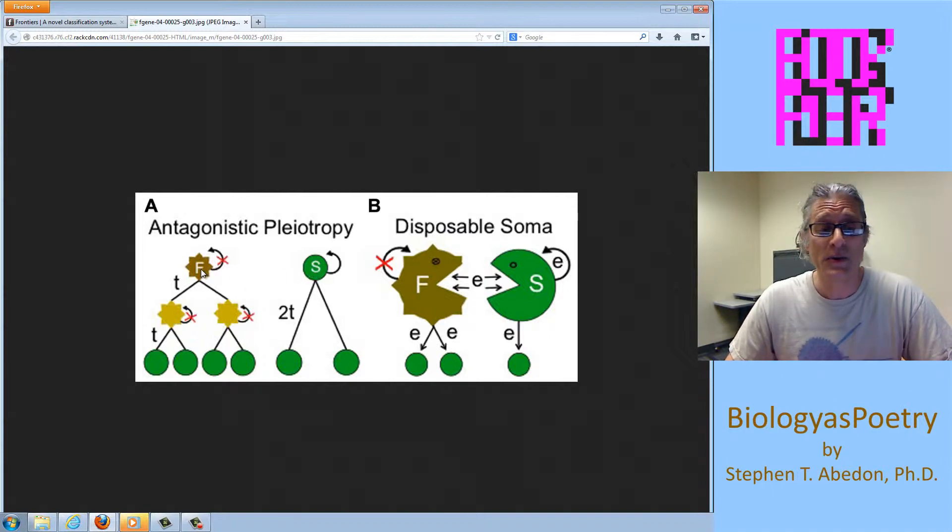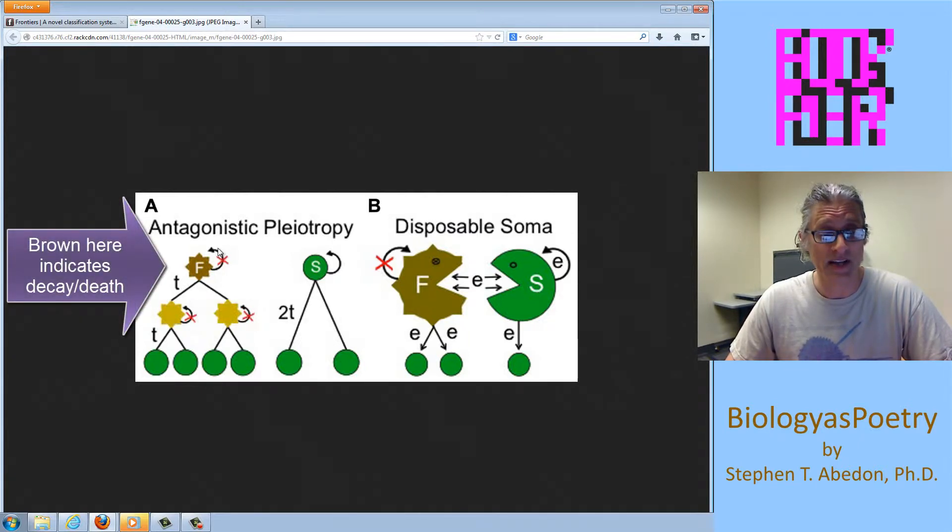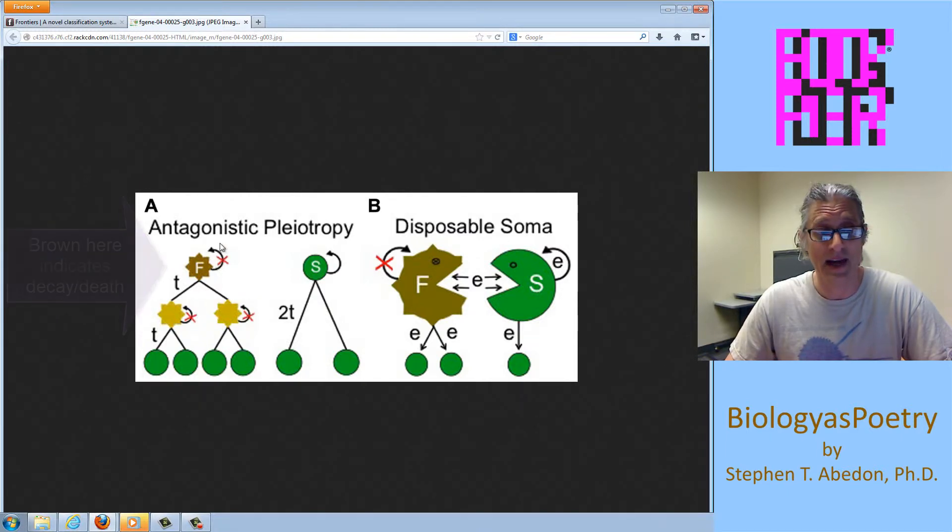However, as a consequence of putting energy into progeny production, this individual is less able to repair itself and therefore is unable to survive for long periods of time. That's what this arrow with the X through it is supposed to indicate, that there's a lack of energy put towards repair.